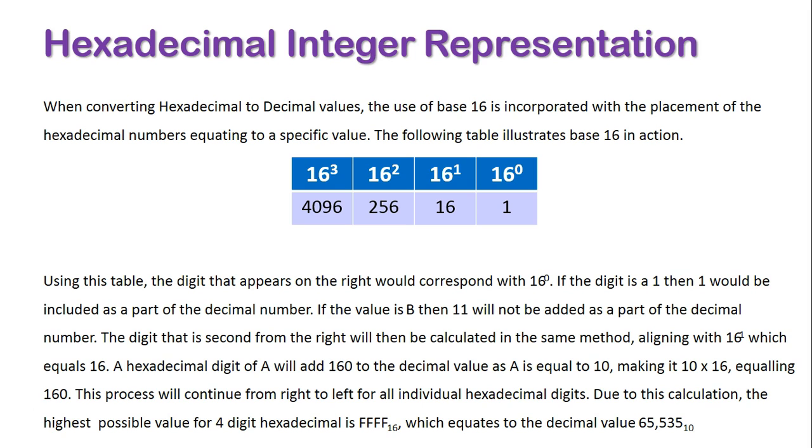Using this table, the digit that appears on the right would correspond with 16 to the power of 0. If this digit is a 1, then 1 would be included as a part of the decimal number. If the value is B, then 11 will be added as a part of the decimal number.